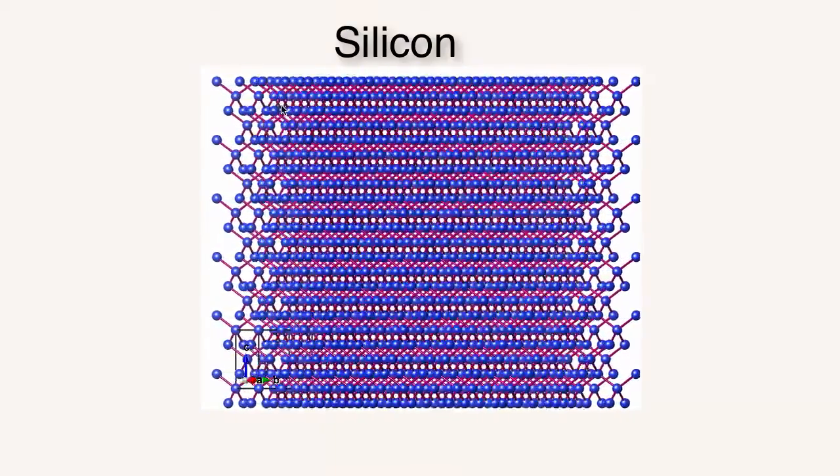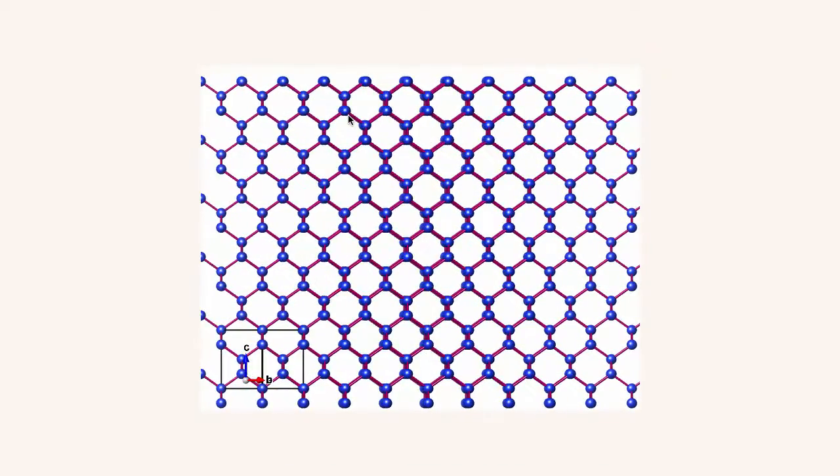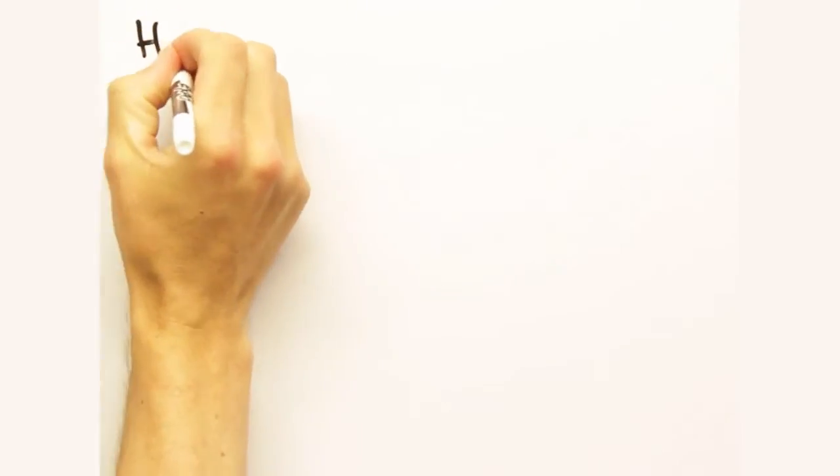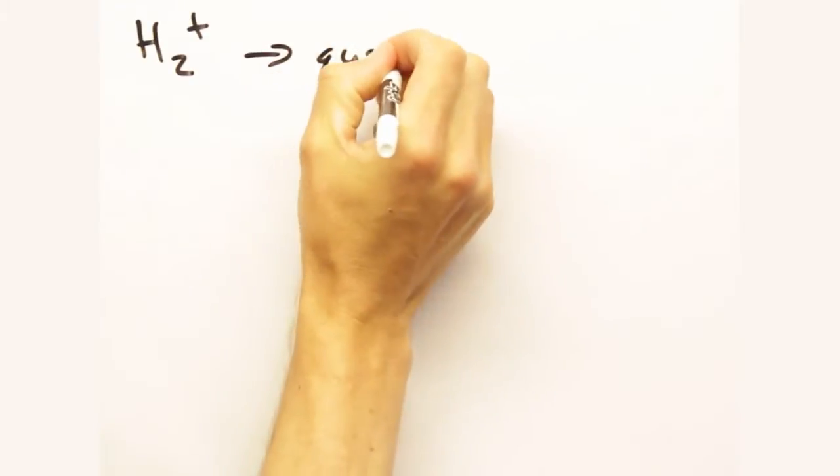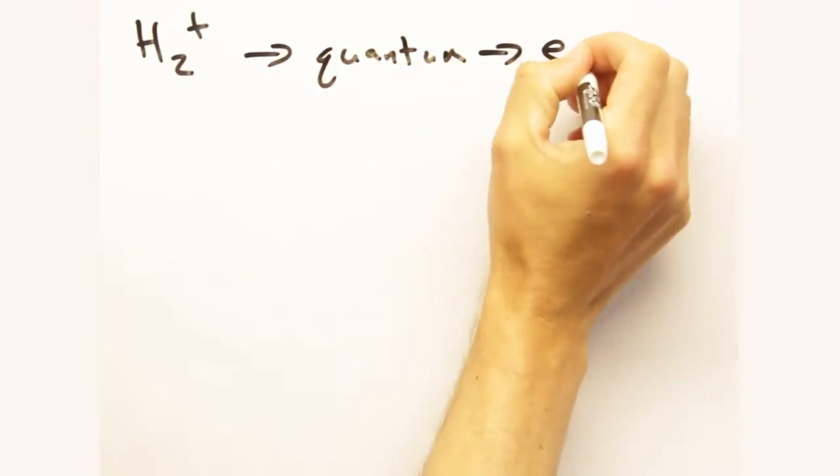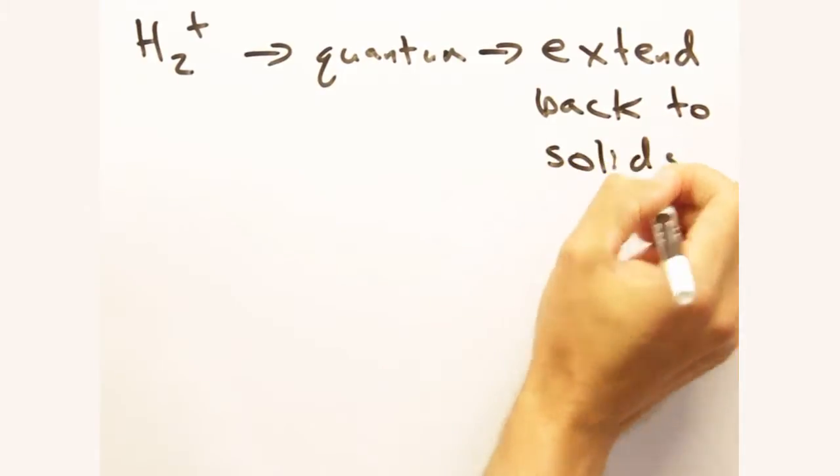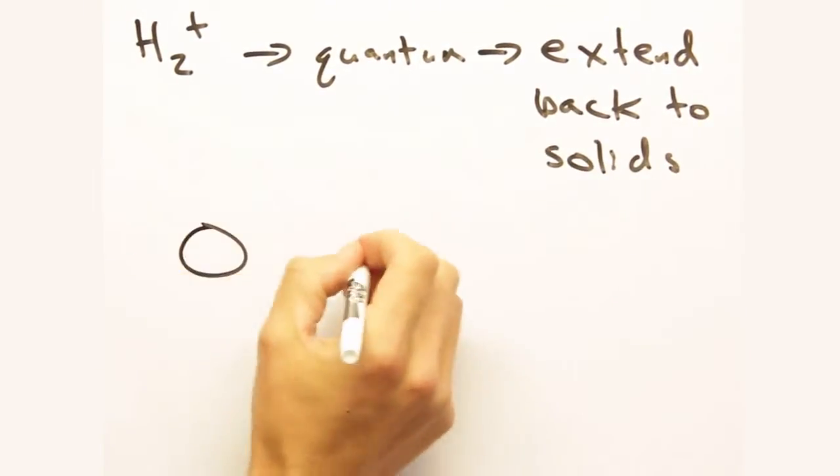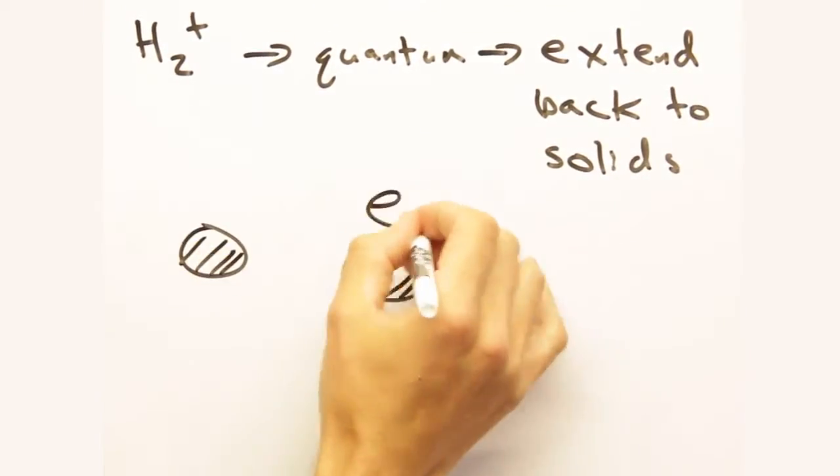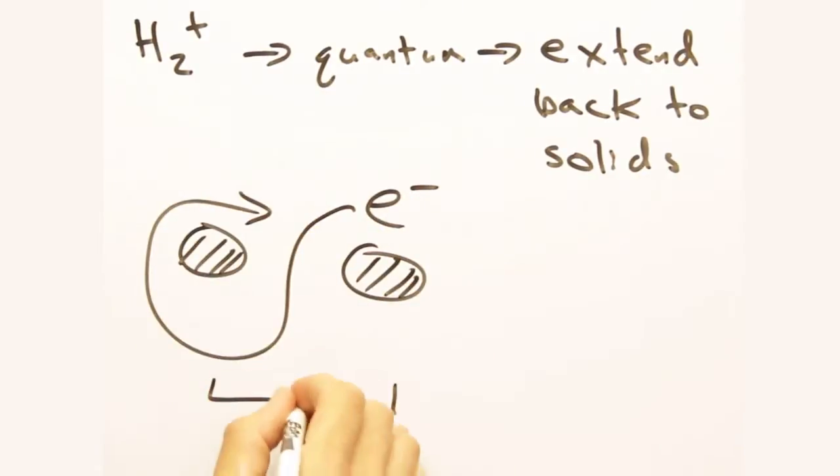Sounds a bit tricky. Maybe we could start by looking at covalent bonds in a hydrogen gas molecule, hit it repeatedly with some quantum, and take that result and apply it to solids? Sounds good. Hopefully that quantum won't hit you back. Let's start with an H2 plus molecule, so just one electron and two protons. What assumptions do you want to make?